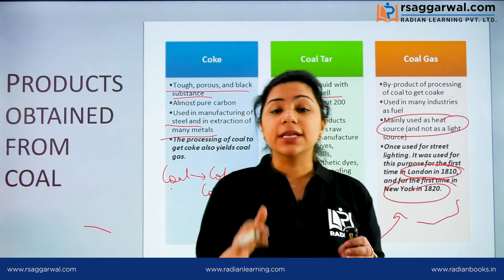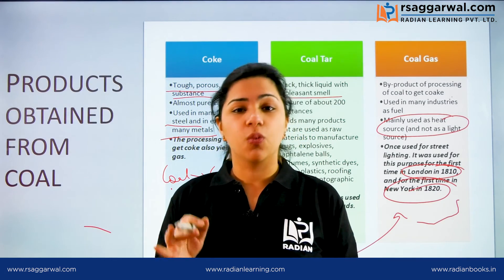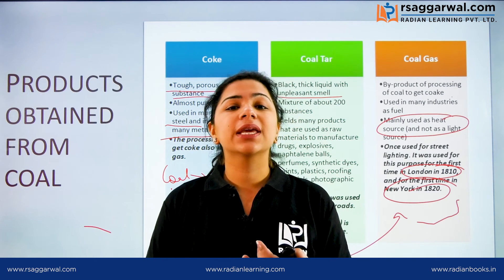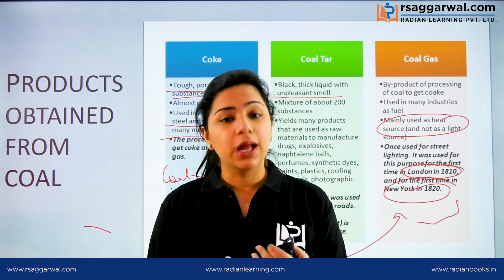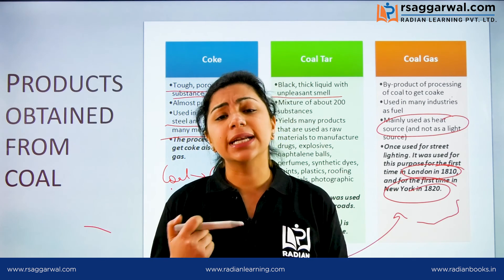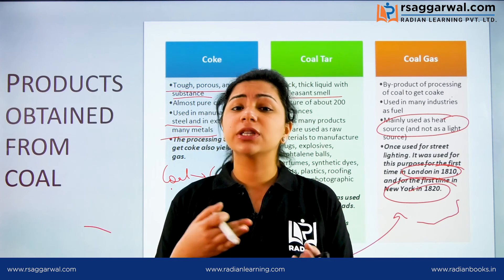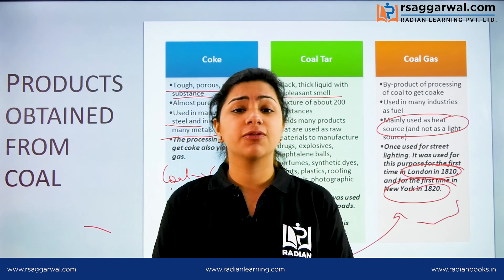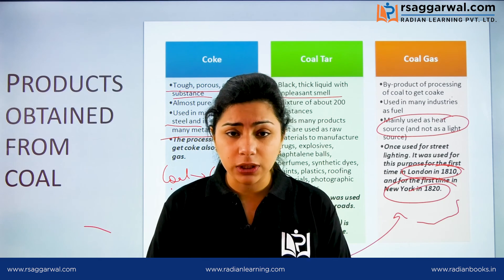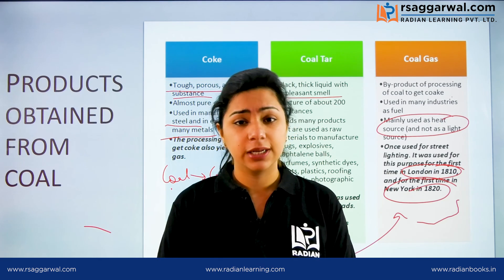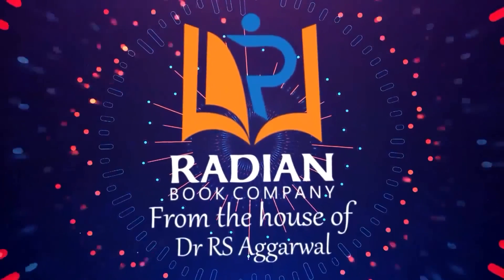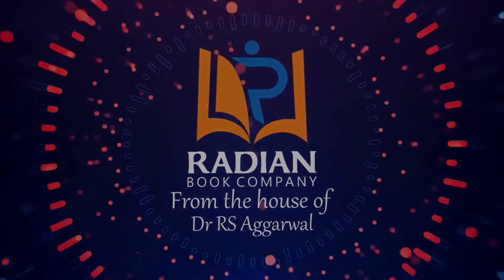So in this video we got a basic idea about what coal is, what products are obtained from coal, how coal has been manufactured, and what types of resources exist. If you have any doubts, you are free to ask in the comment section. In the next video we will discuss what petroleum is and how we obtain it. Thank you!